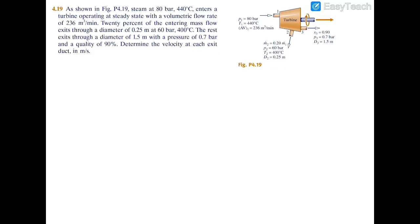We're working with a turbine, with the schematics given. We have steam as the working agent, with an inlet and two exits — exit one and exit two. Our job is to find the velocity of the steam at exit two and exit three.